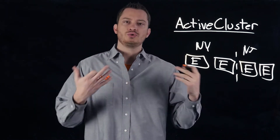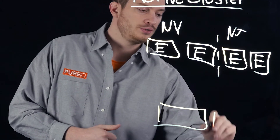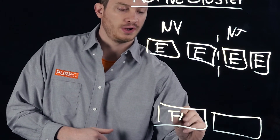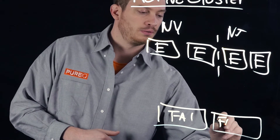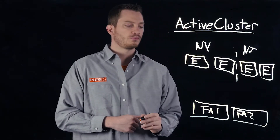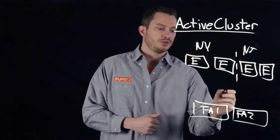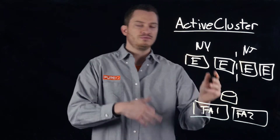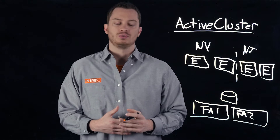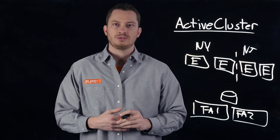In a stretch storage example, we have two arrays — Flash Array One and Flash Array Two. On here I have a volume that's stretched, so this volume is in a pod, and this VMFS datastore exists on both of these arrays.